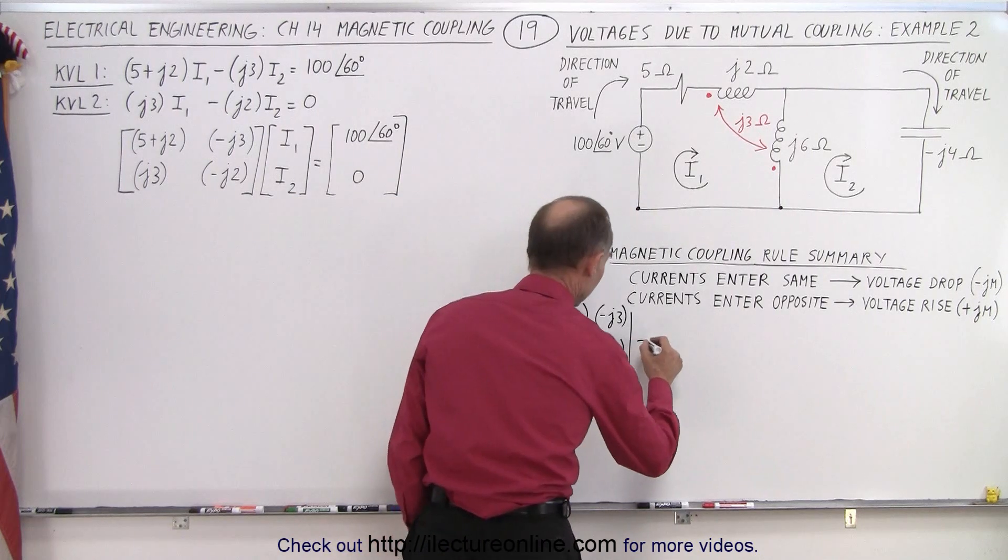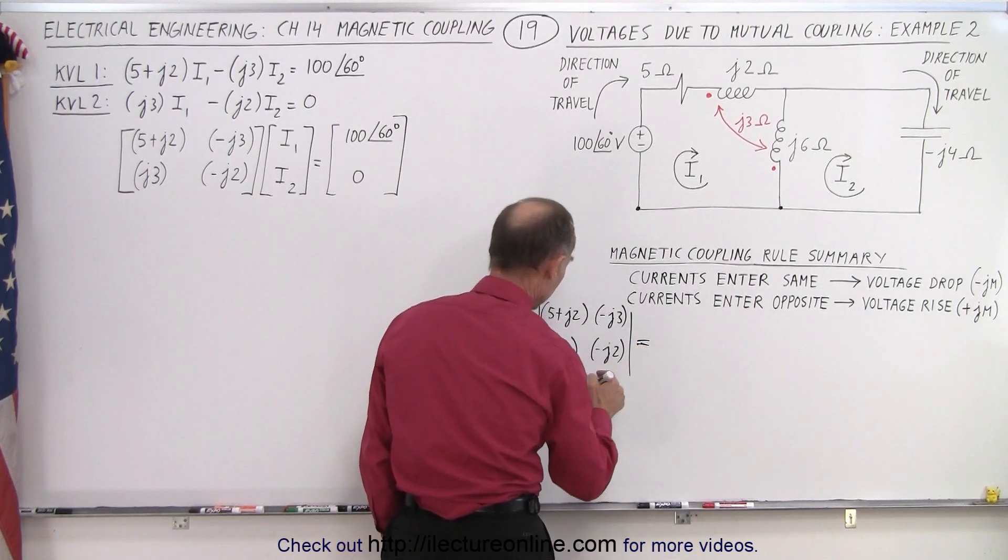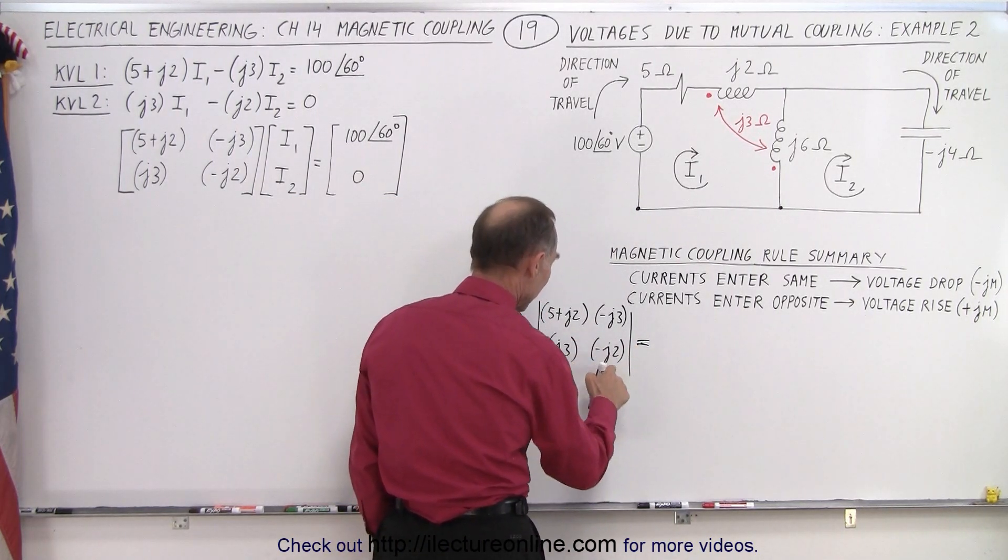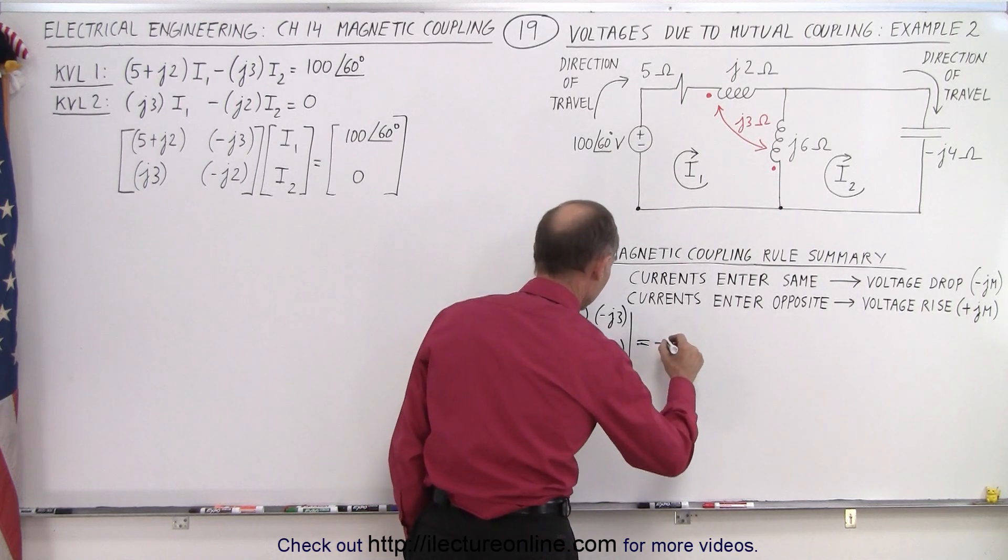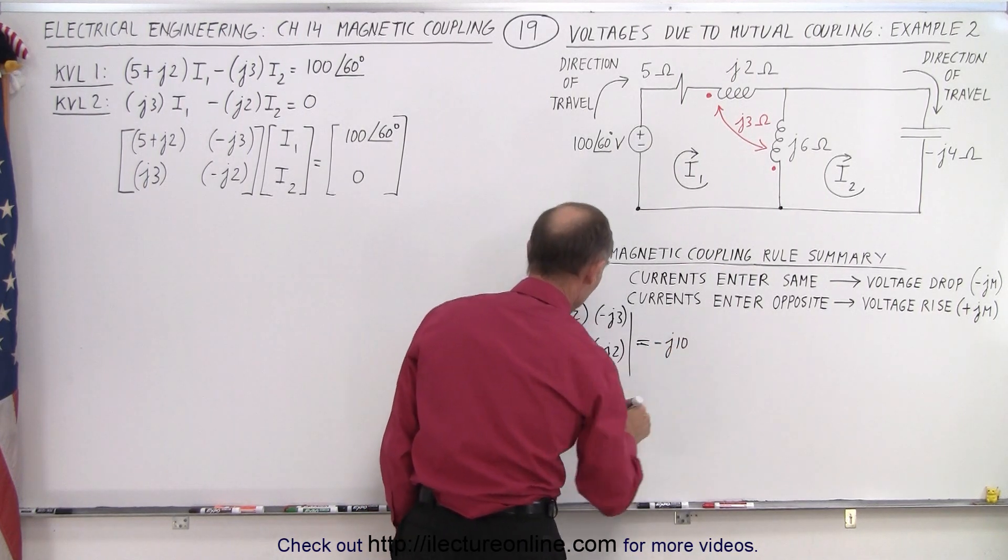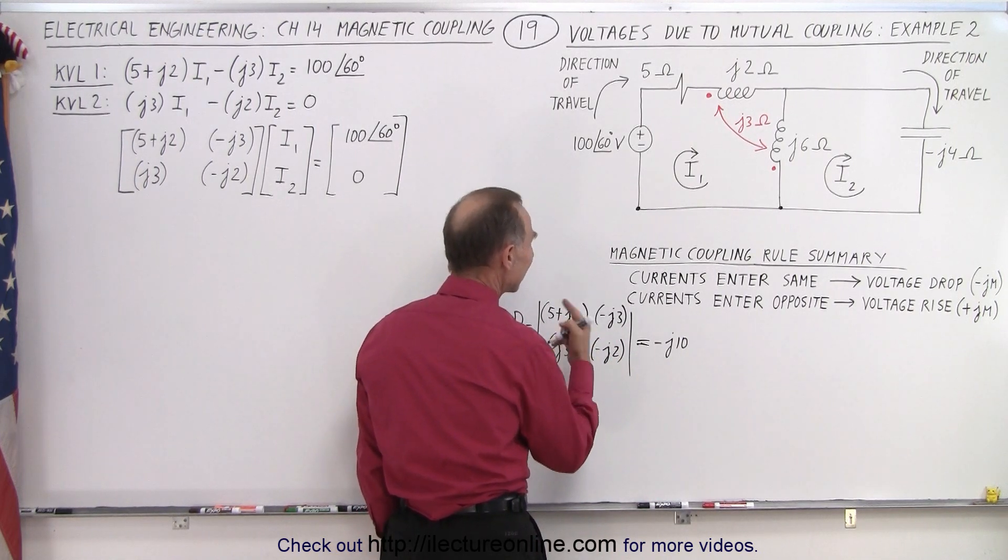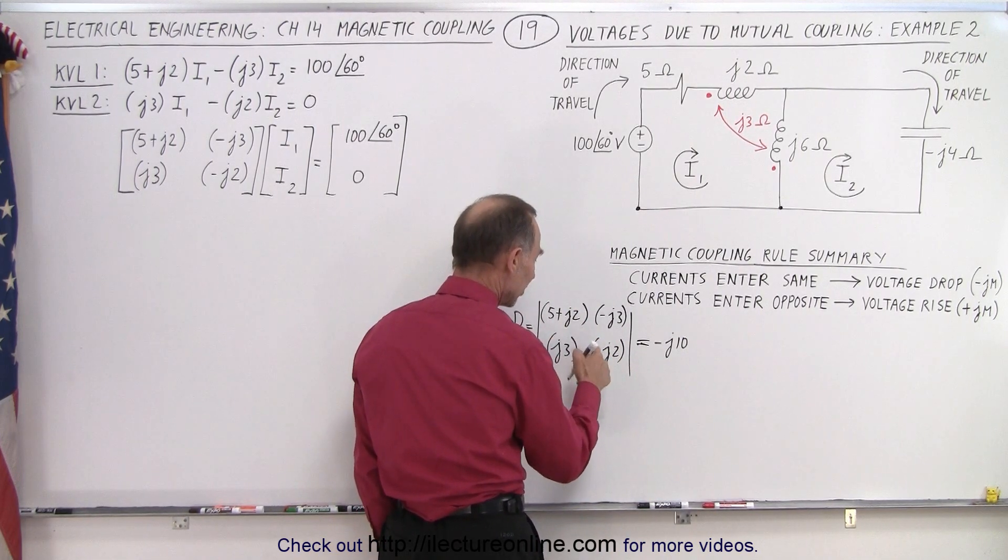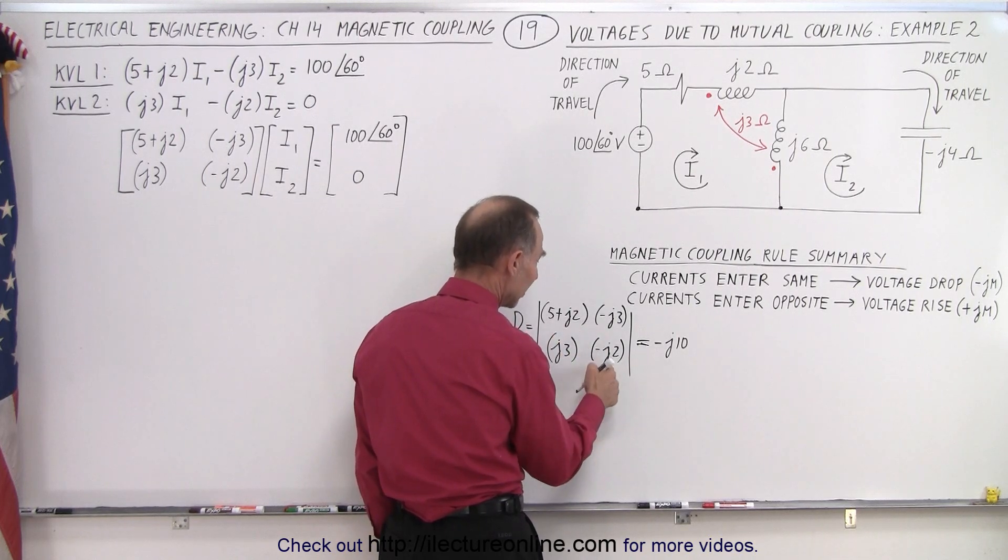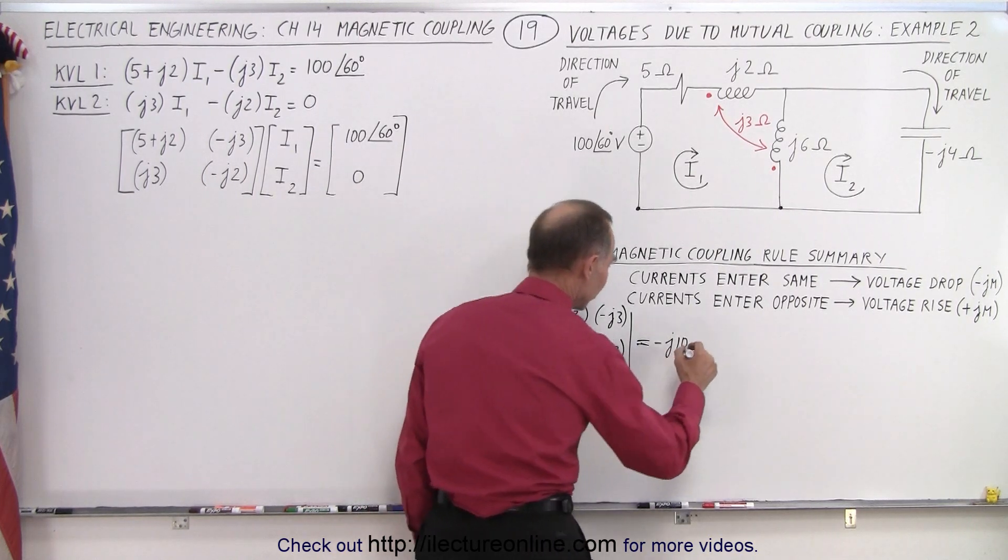First we need to multiply these two elements right here. So we have 5 times a minus J2, that's a minus J10. And we have a J2 times a J2, that is a negative 4. But with the negative here, it becomes a positive 4. J times J is negative, times a negative is positive, so we have plus 4.